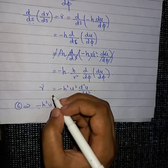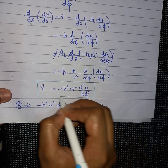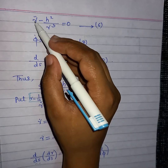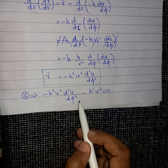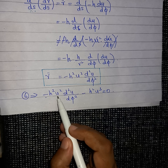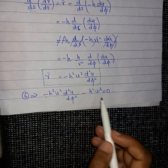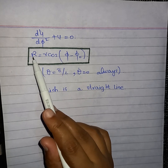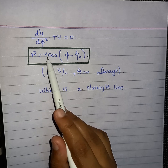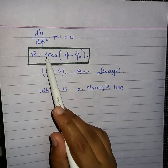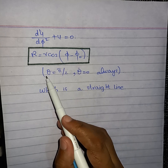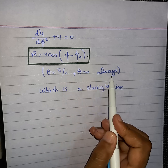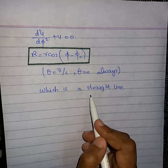We substitute this value of r̈ into equation number 6. Substituting r = 1/u and the expression for r̈, we obtain the next equation. Taking −h²u² as a common factor from both terms simplifies further to give the equation of a straight line: R = r · cos(φ − φ₀), where we have restricted θ = π/2 and θ̇ = 0 always. This is the equation of a straight line.